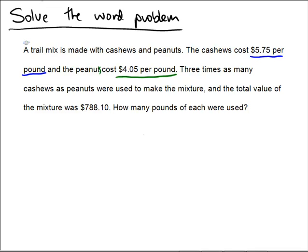So let's start off with the blue. Cashews cost $5.75 per pound and we don't know how many pounds of cashews were used. Peanuts cost $4.05 per pound and we don't know how many pounds of those are going to be used either.